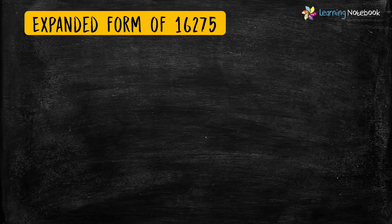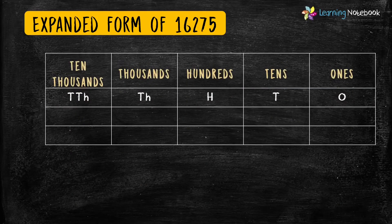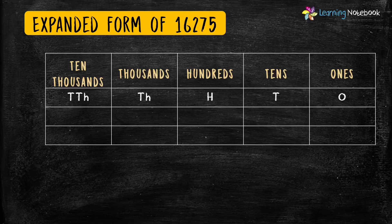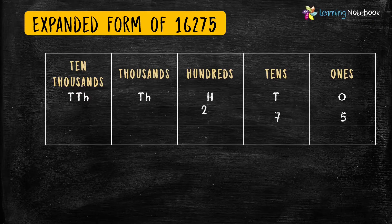To write the expanded form of any number, first we need to find the place values of each digit. To find the place values, we will first make the place value chart of this number. Let's write digit 5 at the 1's place, digit 7 at the 10's place, digit 2 at the 100's place, digit 6 at the 1,000's place, and digit 1 at the 10,000's place.